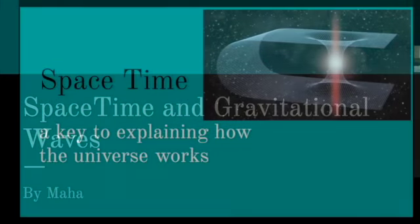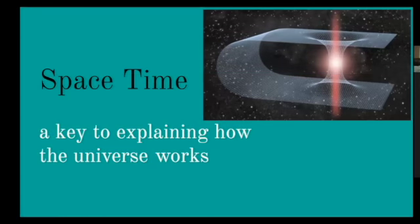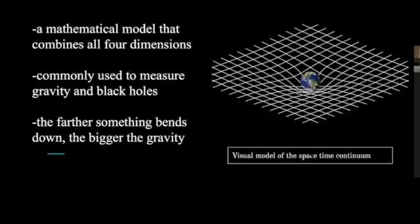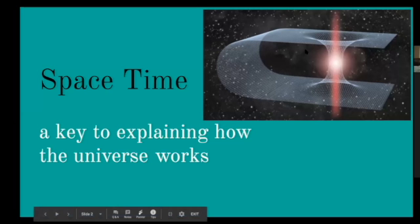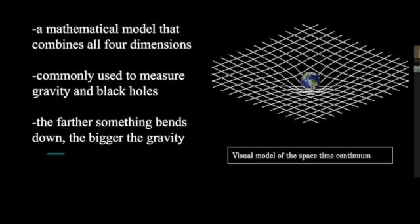Let's start off with the idea of space-time. Space-time is a key to explaining how the universe works. It's basically a mathematical model that combines all four dimensions—the first three dimensions are length, width, and height, and the last fourth dimension is time. Combined together, this mathematical model is used to measure gravity and black holes.